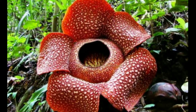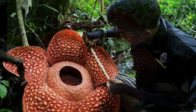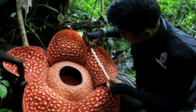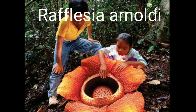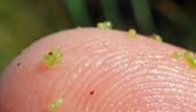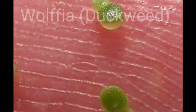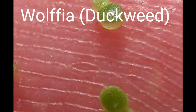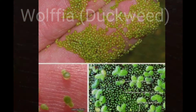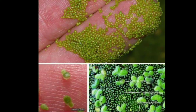Did you know? The world's largest flower is found in Indonesia. The diameter of the flower of the plant Rafflesia arnoldi is about 1 meter. The world's smallest flower is of the plant called Wolfia, or duckweed. Its diameter is as small as 0.5 mm.